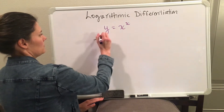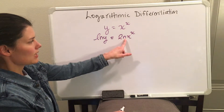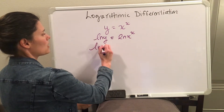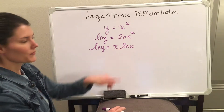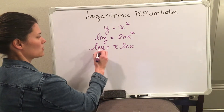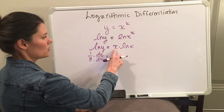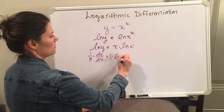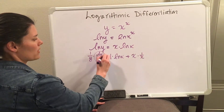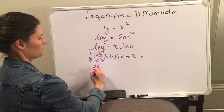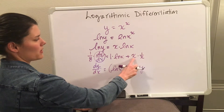So again, you take the natural log of both sides, and then use log properties to break it down. On the right-hand side, bring the power down to the front. Now I can take the derivative — this is a product rule. The derivative of natural log of y is 1 over y times dy/dx. The right side gives: derivative of x times natural log of x, plus x times 1 over x. I also simplified x times 1 over x to 1.